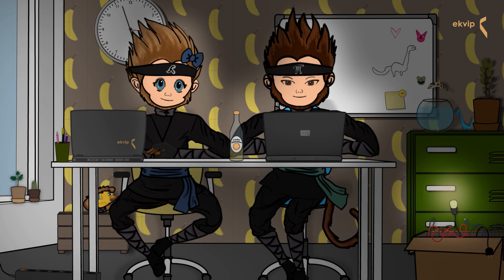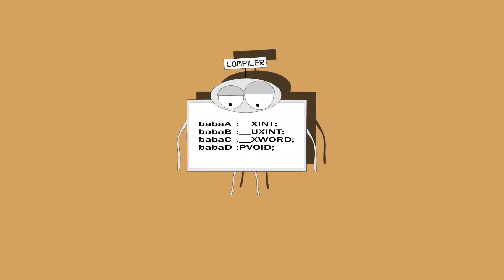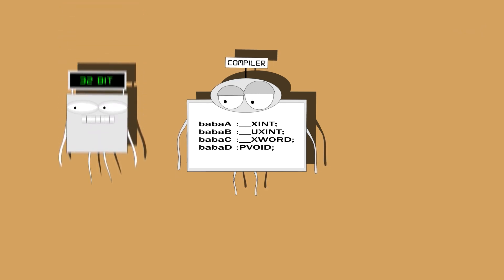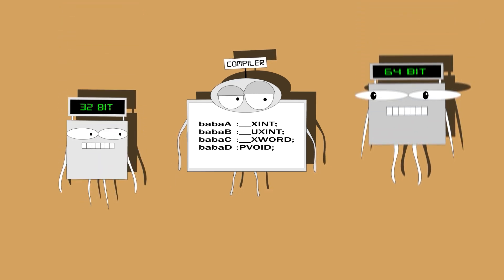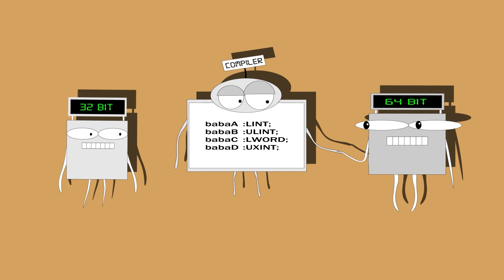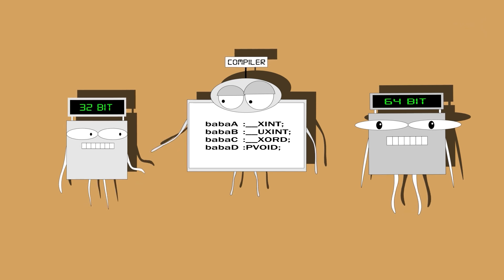These data types belong to a special category where variables are converted to a platform-compliant data type depending on the target system. They make the IEC code as independent as possible from the target system. TwinCAT supports systems with address register widths between 32 and 64 bits. When connected to a target system, the compiler checks which type is used and converts the pseudo data types to the respective standard data types.